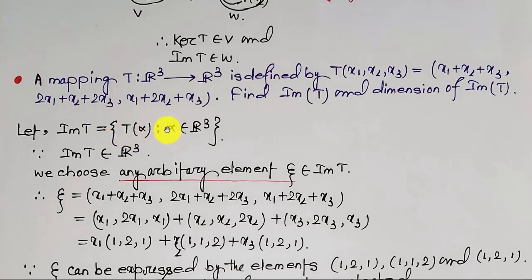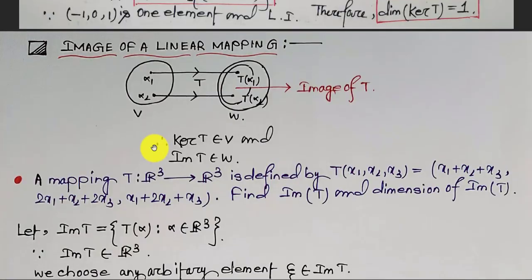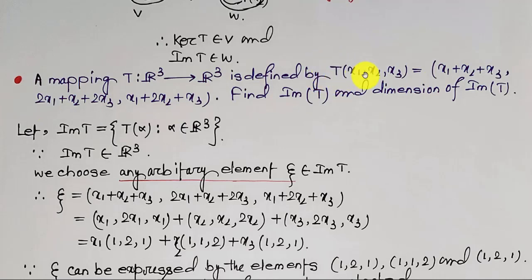To find MT, let MT = {T(alpha) such that alpha belongs to R³}, since the co-domain set is R³. Since MT belongs to R³, choose an arbitrary element Y belonging to MT. Here Y is from the co-domain set, so Y = (x1+x2+x3, 2x1+x2+2x3, x1+2x2+x3), where (x1,x2,x3) is from the domain set, which gets mapped to this element in the co-domain set.